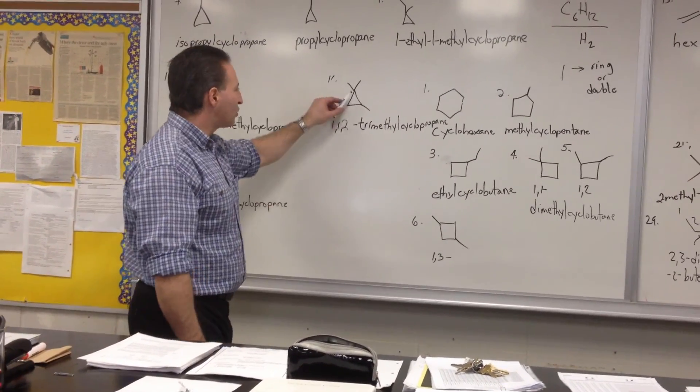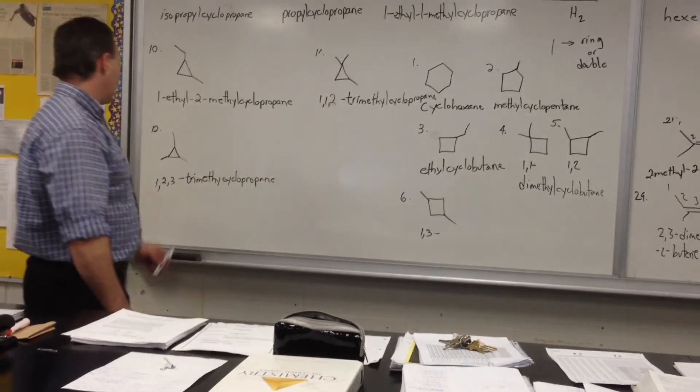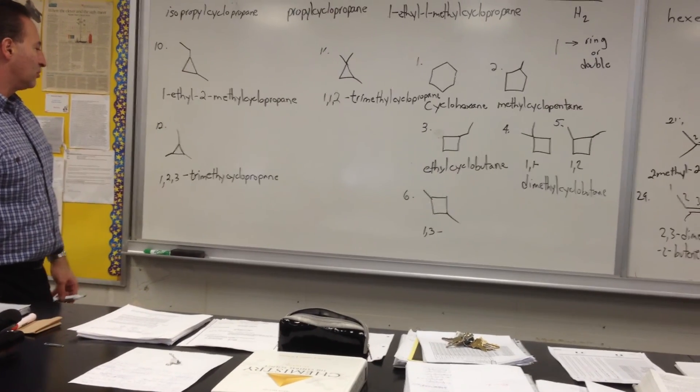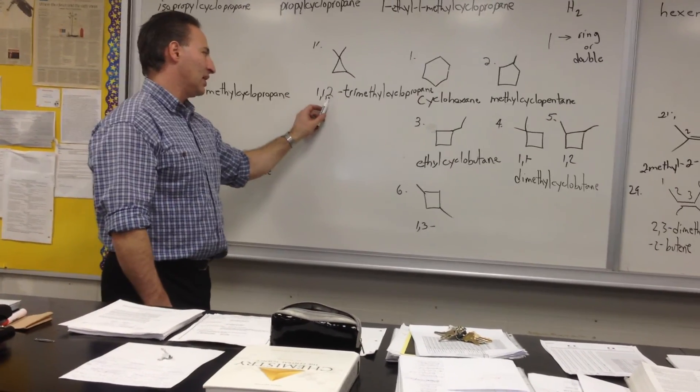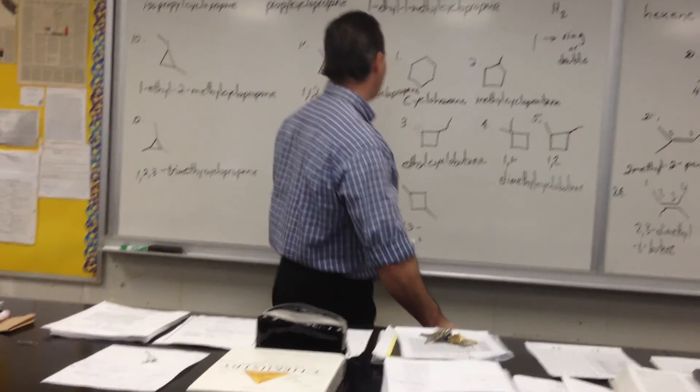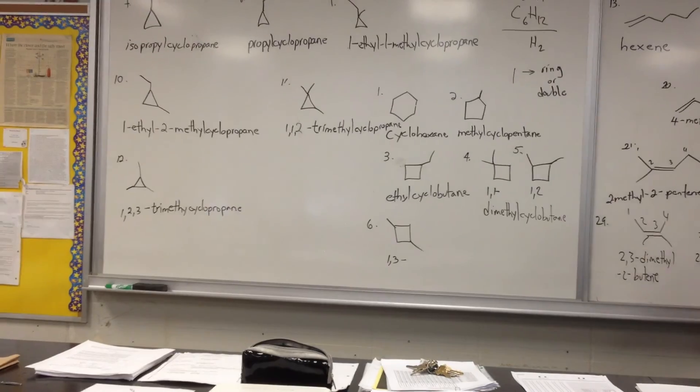The eleventh possibility is now we're using only methyls on the cyclopropane. So we get 1,1,2-trimethylcyclopropane. Notice how each substituent gets a number to describe its position. Then we have 1,2,3-trimethylcyclopropane. You can't have 1,1,3 because you would actually rename it as 1,1,2-trimethylcyclopropane. That exhausts all possibilities with a ring. And we get 12 isomers from that alone.